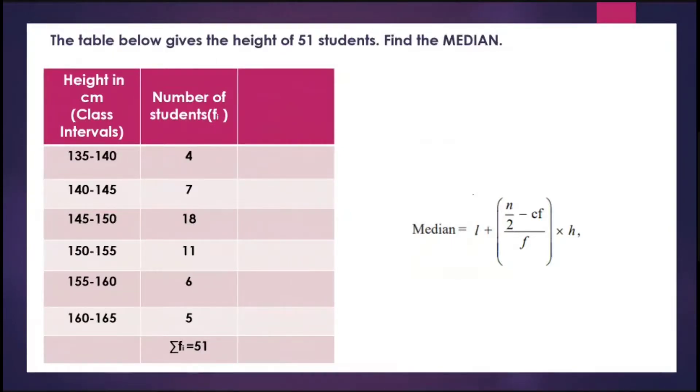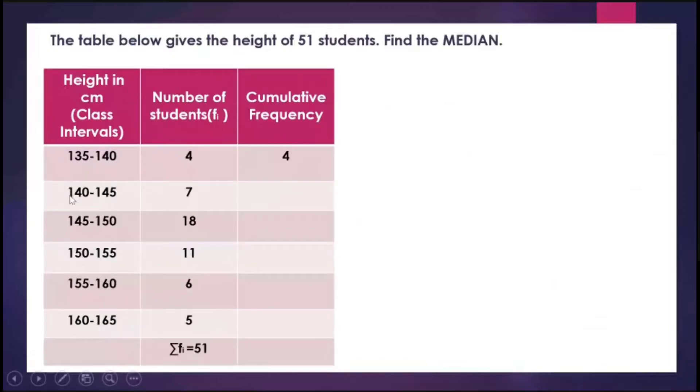Let us first find the cumulative frequency. The first row, 135 to 140, number of students is 4, so cumulative frequency is also 4. For the next class, 140 to 145, I get the cumulative frequency by adding the consecutive frequencies. 4 plus 7 equals 11.